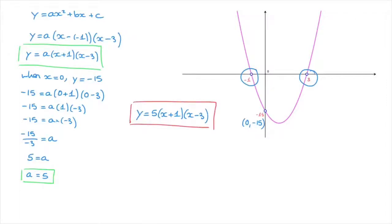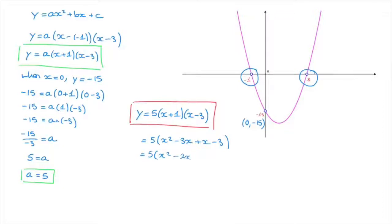Combining this result with the factored form, we can state this parabola's equation is y equals 5 times (x plus 1) times (x minus 3). If asked to write it in the form ax squared plus bx plus c, we distribute the parentheses: 5 times (x squared minus 3x plus x minus 3) equals 5 times (x squared minus 2x minus 3). Distributing the 5 gives the final answer: y equals 5x squared minus 10x minus 15.